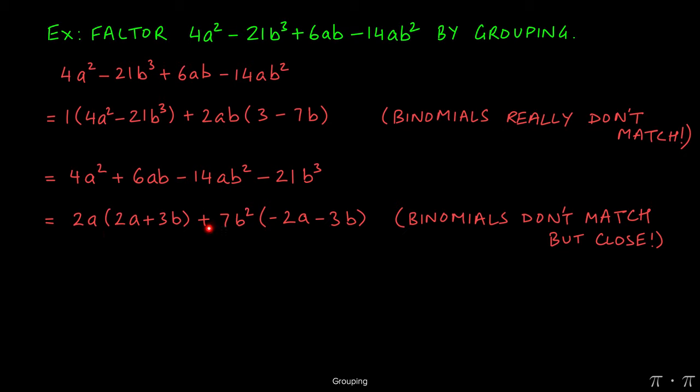So instead of factoring out a positive 7b, what happens if we factor out a negative 7b squared? Well then, 14ab squared divided by negative 7b squared will give us a 2a, and then negative 21b cubed divided by negative 7b squared will give us a 3b.